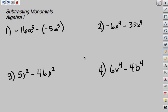Let's look at some examples where we are subtracting monomials. The first example: negative 16a to the fifth minus negative 5a to the fifth. They have the same variable and exponent, they're both a to the fifth, so we can subtract them.